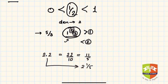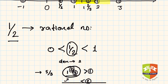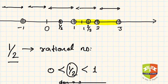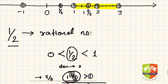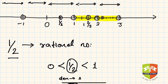So two whole one upon five means this number is greater than two and less than three. I have to divide the gap between two and three — look at the denominator — into five parts. Five parts means I put four points. I divide into five equal parts and take the first part, which ends here. I encircle that point — this point represents two whole one upon five, which equals eleven upon five, which equals two point two.